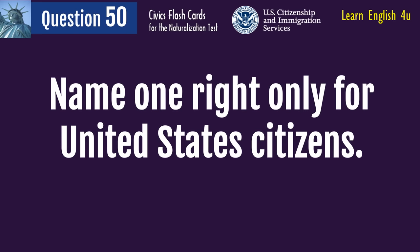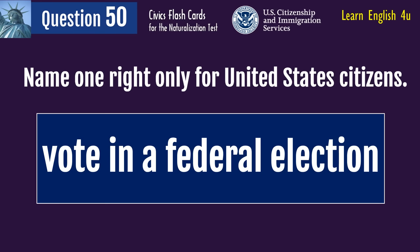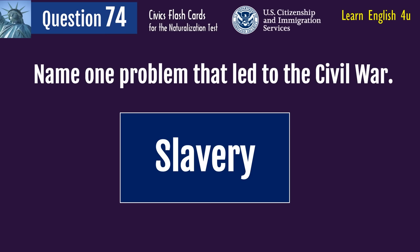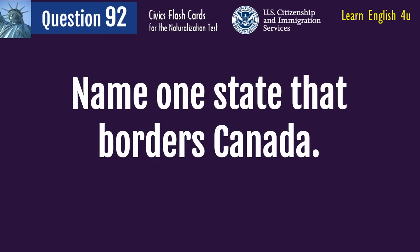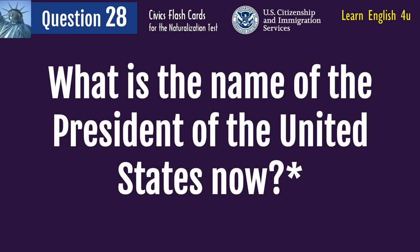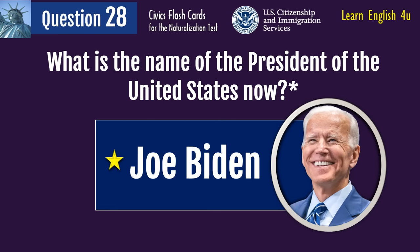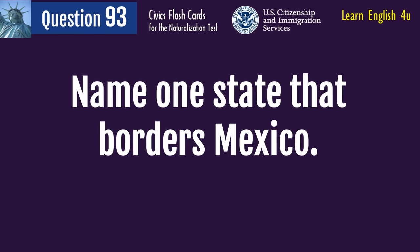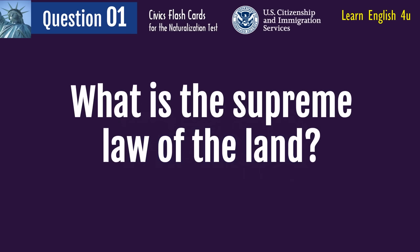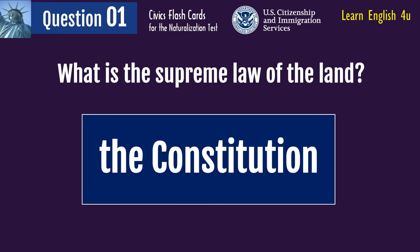Name one right only for United States citizens. Vote in a federal election. Name one problem that led to the Civil War. Slavery. Name one state that borders Canada. New York. What is the name of the President of the United States now? Joe Biden. Name one state that borders Mexico? New Mexico. What is the supreme law of the land? The Constitution.